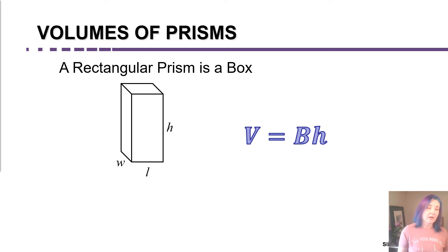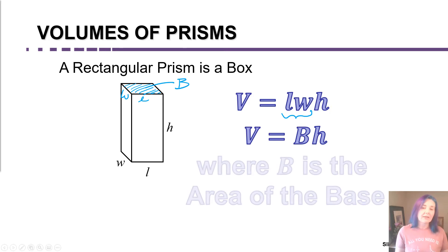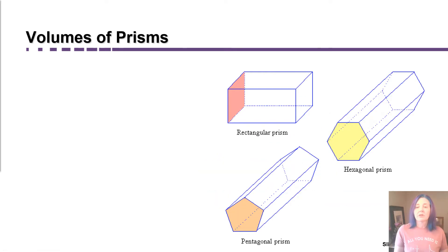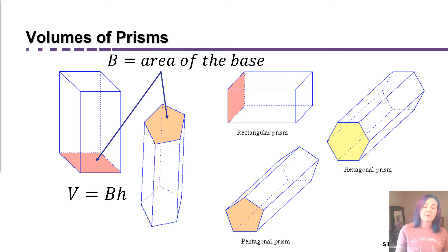We learned that the volume of a box can be thought of as the length times width times height, but we also learned that you can think of it as the area of the base times the height, because this face at the top has dimensions W by L. I could refer to this area as capital B. B is the area of the base. Well, it turns out that no matter what shape of the base is, we can still find the volume the same way, by multiplying the area of the base times the height.